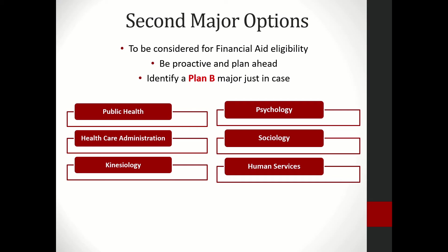To be considered for financial aid, all pre-nursing students must declare a second major. Whether or not you take any courses related to your second major is not important — it is meant to serve as a backup for your financial aid. You can ultimately change your major to whatever you like, but initially we ask that you choose from six specific majors, as the course progression from pre-nursing to one of these majors is very similar.